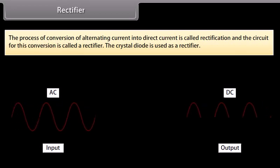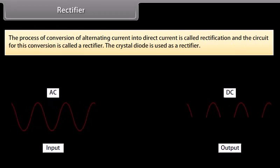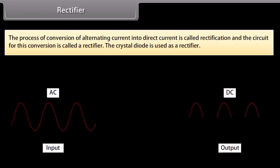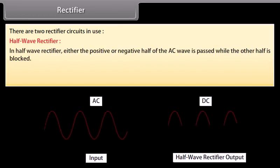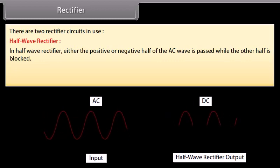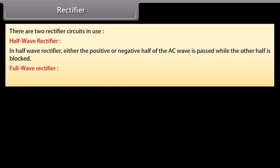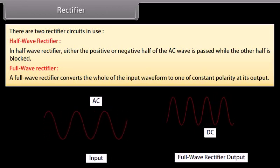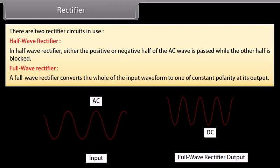Rectifier: the process of conversion of alternating current into direct current is called rectification, and the circuit for this conversion is called a rectifier. The crystal diode is used as a rectifier. There are two rectifier circuits in use. Half-wave rectifier: in a half-wave rectifier, either the positive or negative half of the AC wave is passed while the other half is blocked. Full-wave rectifier: a full-wave rectifier converts the whole of the input waveform to one of constant polarity at its output.